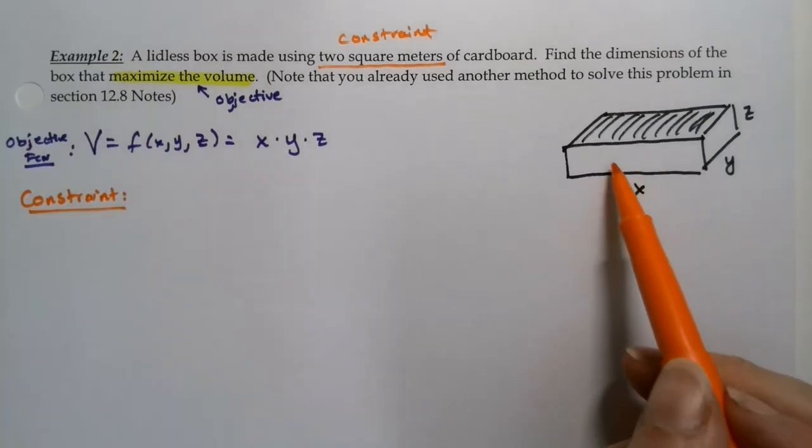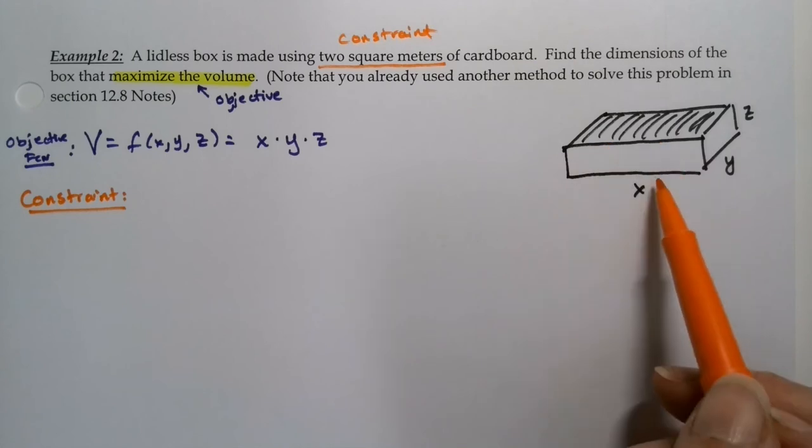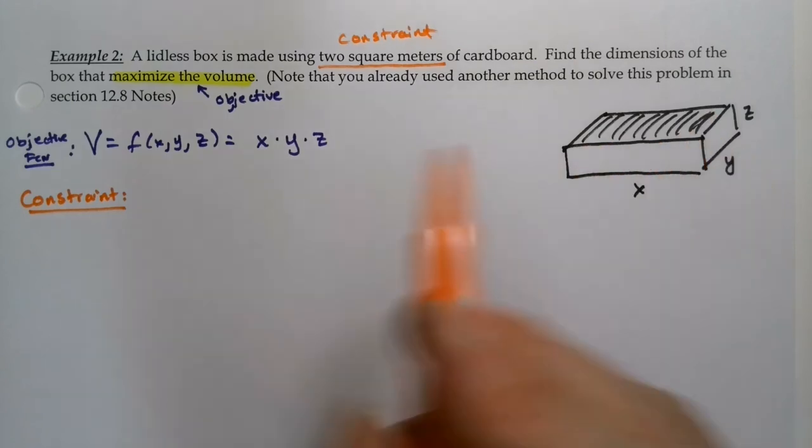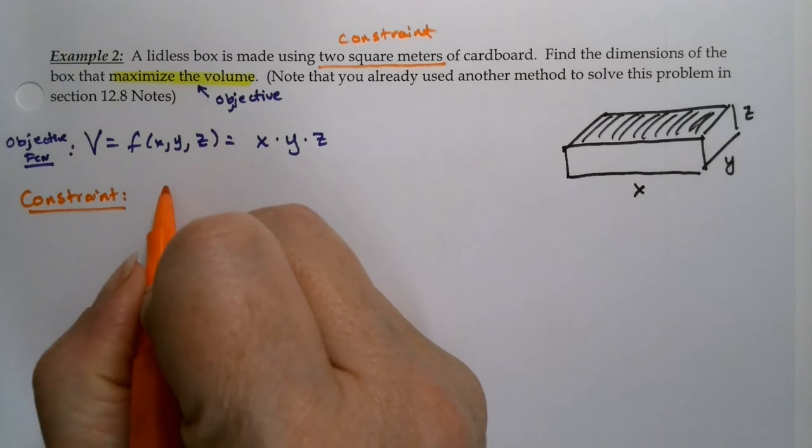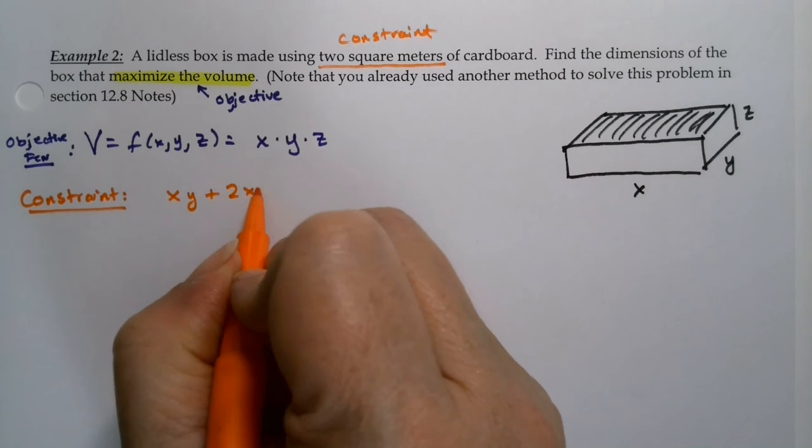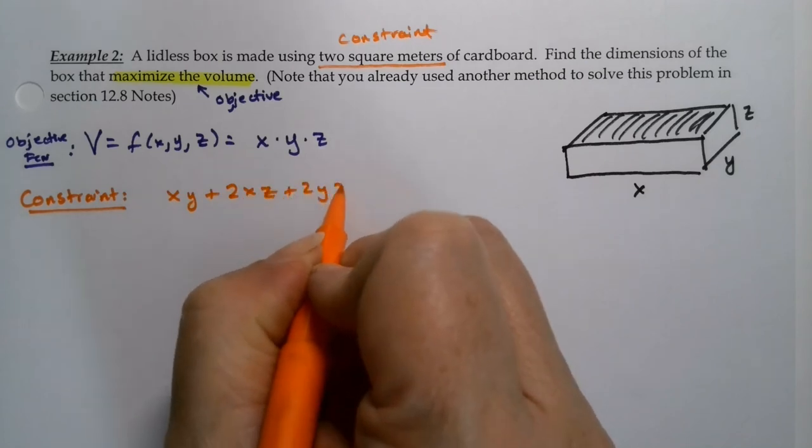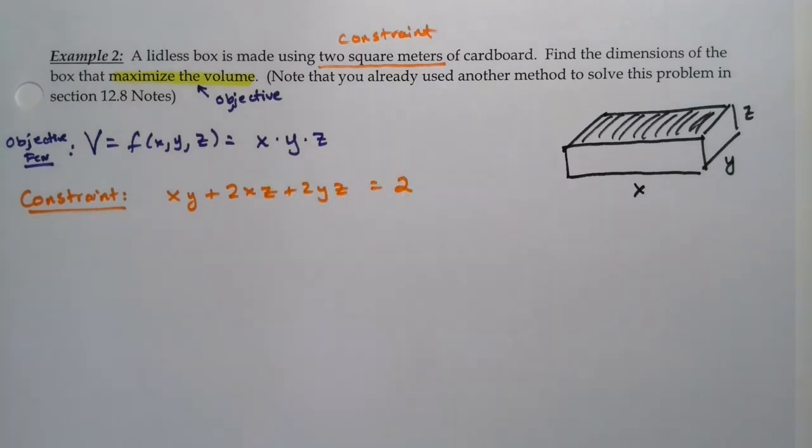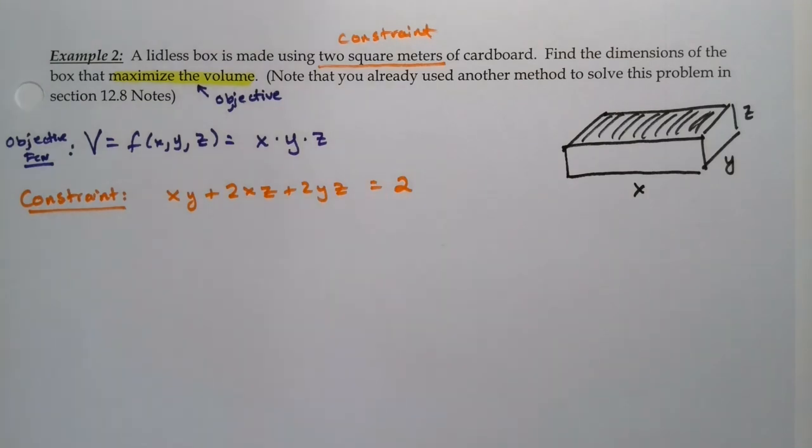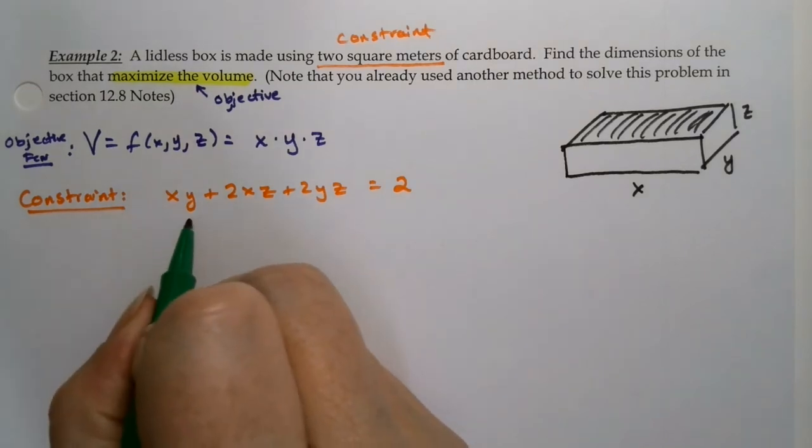Now the constraint is a little bit more fun. The constraint is based on the surface area. So remember you have two fronts, two sides, and only one bottom. So front and back and the two sides. So you're going to have xy on the bottom plus 2xz plus 2yz. And it has to all be equal to two because you have two square meters of cardboard. So that's the surface area.